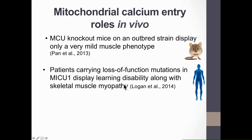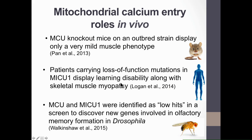This idea was further strengthened by the results of a high-throughput screening performed in the Davis lab, with the main goal of identifying new genes involved in olfactory memory in Drosophila. Among the hundreds of hits — proteins whose silencing causes a decrease in memory — MCU and MICU1 were identified.